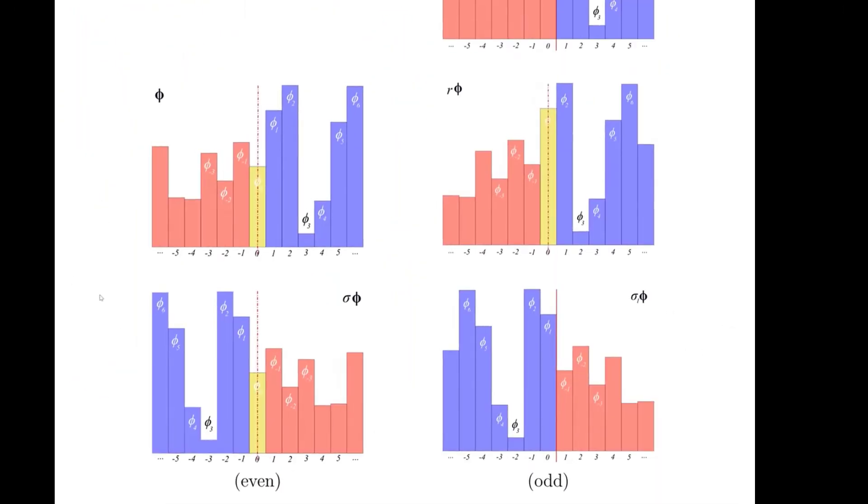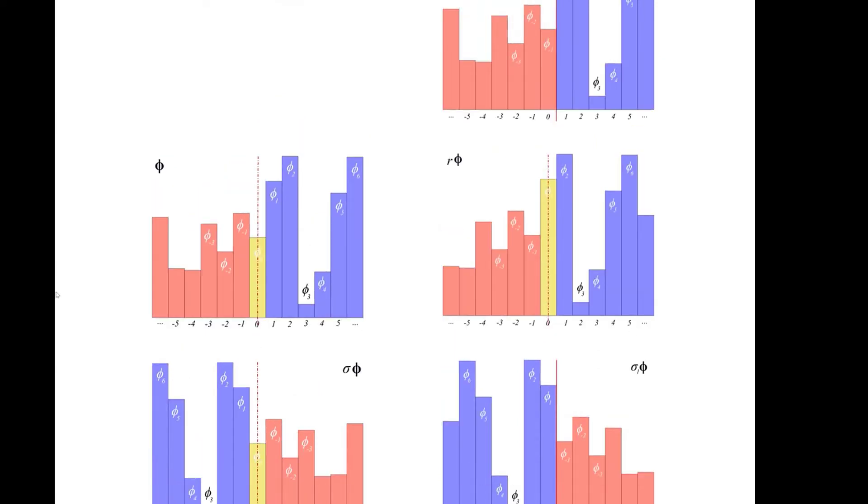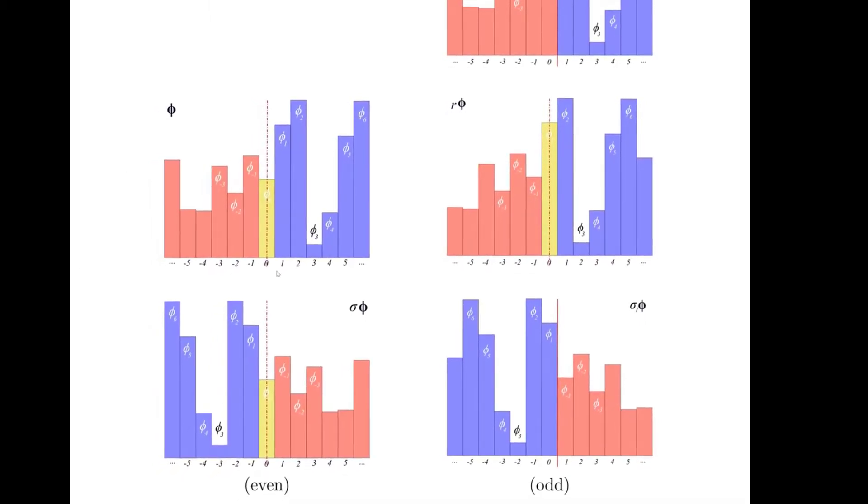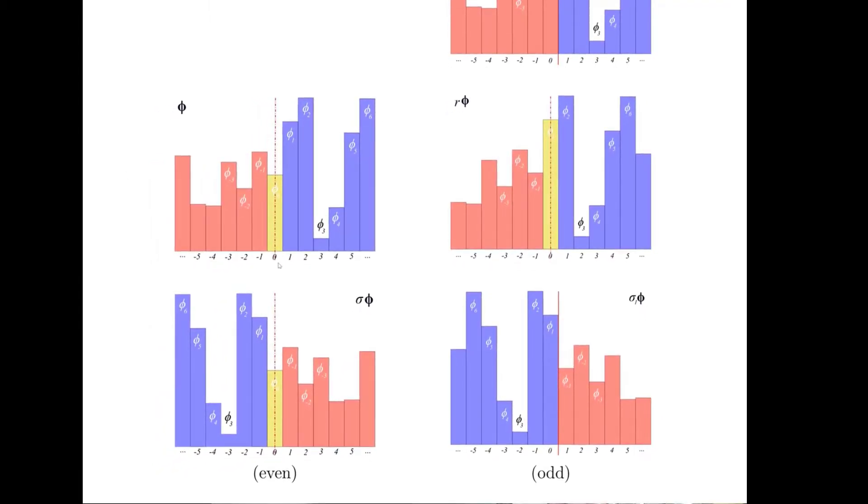reflection or inversion on a lattice has two forms. If you have a lattice and you have a field on a lattice, you can stand at zero. I'm the center, I'm the yellow column, I'm the gold, I'm origin.